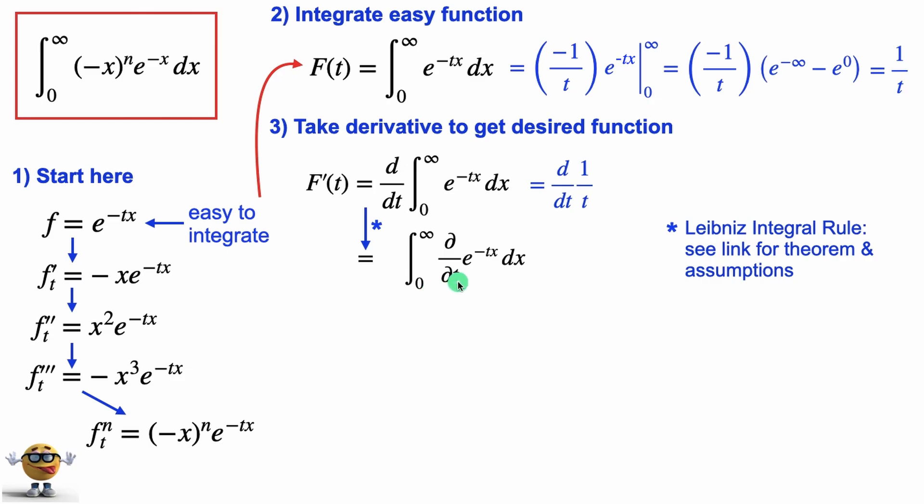Okay, now from here, we're taking the partial derivative. So before, we're taking just like a regular single variable derivative, because after we evaluate the integral, the x is gone. So it's a function of t. Now that the derivative is inside the integral, we have to take the derivative of a function that depends on both t and x. So it's a partial derivative.